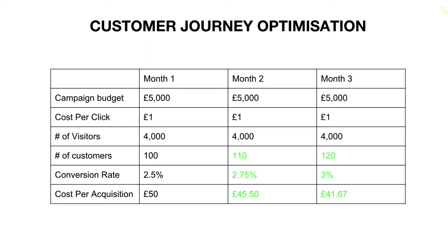But by increasing the conversion rate — improving the customer journey by 2.75% on month two — you get an extra 10 customers. And if you increase that to 3%, you're getting an extra 20 customers, which is a total of 120 customers. So that's an extra 20 customers a month without spending any more money. Not only this, your cost of acquiring a customer goes down to £45.50, and with 3% it's £41.67. Imagine what you could achieve in a year.